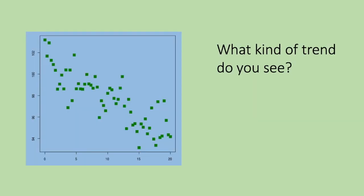This is an example of a scatterplot. In this scatterplot, what kind of trend can you see? When I look at the scatterplot, I can see that the points are generally going from a higher point to a lower point.